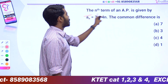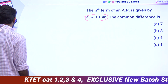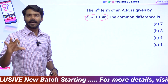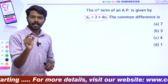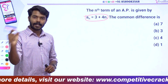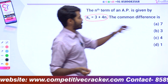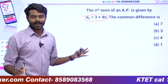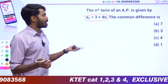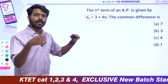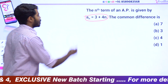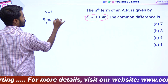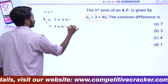What will be the basic sequence? What is the general term — the algebraic form? Find out the general term, find out the algebraic term, and then you will find the terms. To find the common difference: when n equals 1, a₁ equals 3 plus 4 into 1, which equals 7.